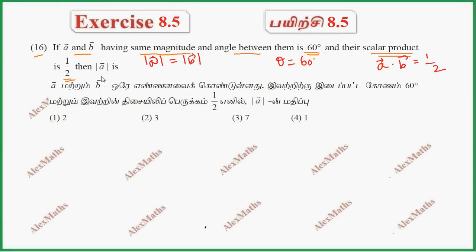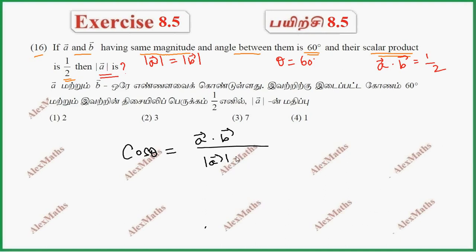To find mod A, we use the formula: cos theta equals A vector dot B vector divided by mod A times mod B. Since the scalar product is half, cos theta equals half mod A times mod B.